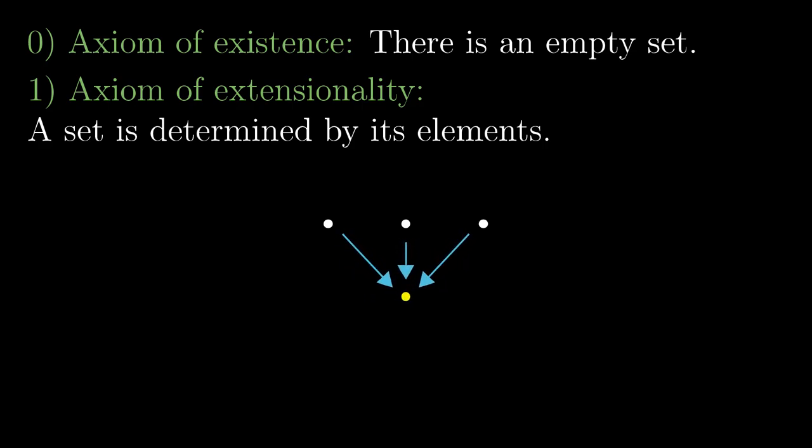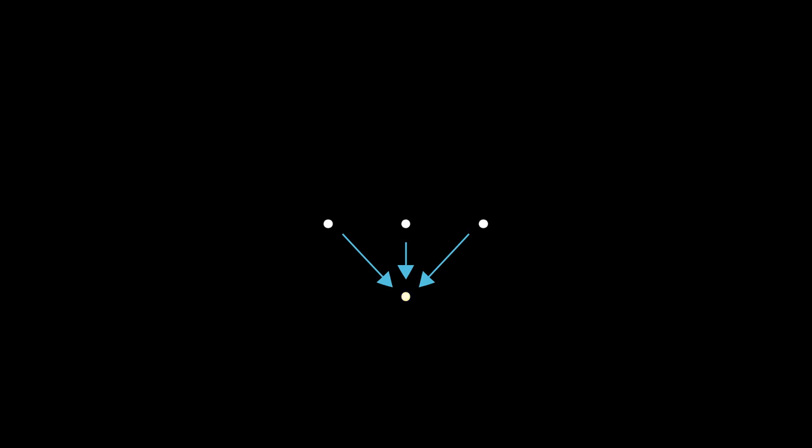Side note: now it can look like the three white elements defy the axiom of extensionality, but it is just because we do not draw the entire world of sets and the white elements contain other things which make them distinguishable. So far, we have introduced two basic axioms of set theory. Now let's think about how to build a set. For example, with the following axiom.